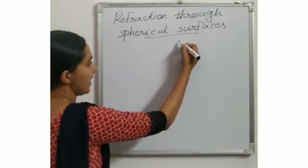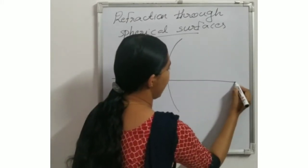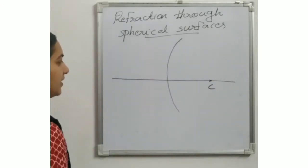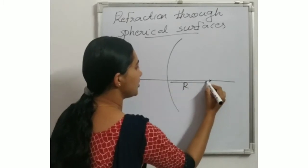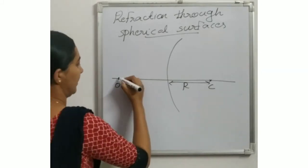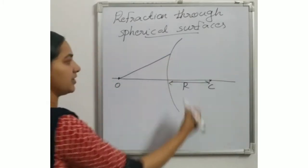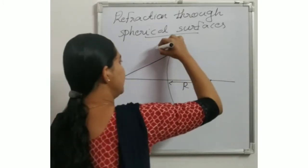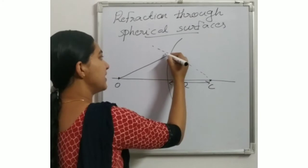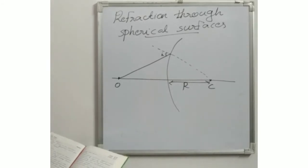Consider a spherical surface here. If this is the principal axis and this is the center of curvature, then this distance will be the radius of curvature. Suppose one object is there, and from that object consider one ray that is incident at a particular angle. This will be the normal and this will be the angle of incidence I — the angle between the normal and the incident ray.